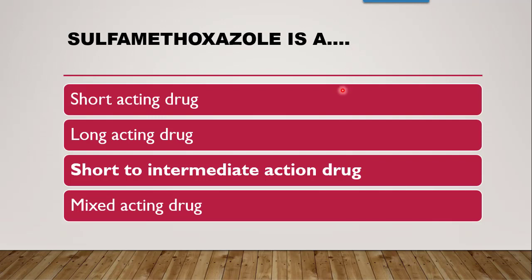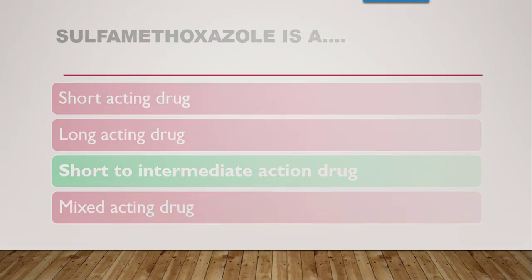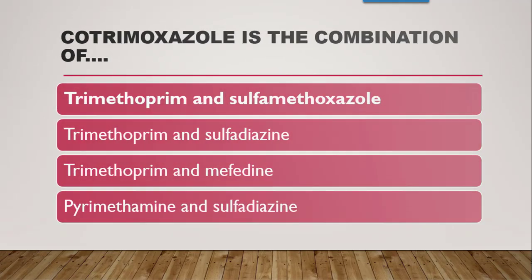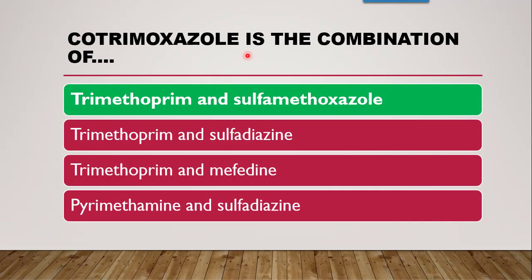Next question: cotrimoxazole is the combination of which drugs? As the name suggests — 'tri' means trimethoprim, 'moxazole' means methoxazole. The options are: trimethoprim and sulfamethoxazole, trimethoprim and sulfadiazine, trimethoprim and mepidine, or pyrimethamine and sulfadiazine. The correct answer is trimethoprim and sulfamethoxazole.